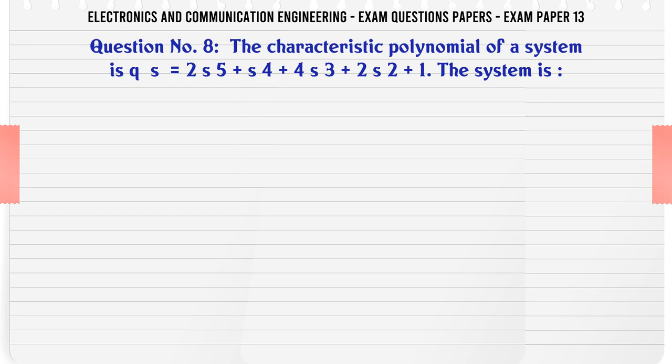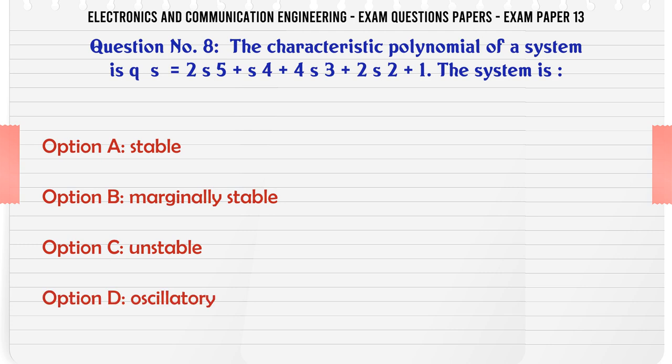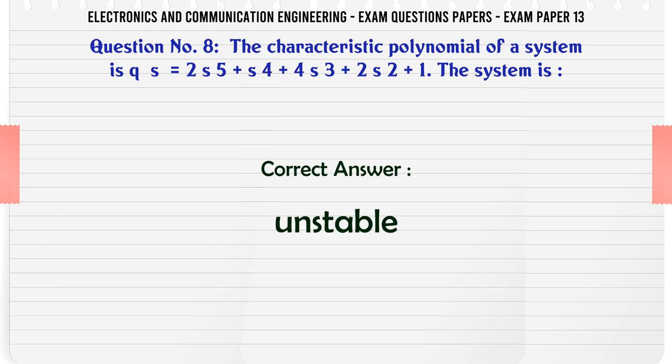The characteristic polynomial of a system is Q(S) = 2S^5 + S^4 + 4S^3 + 2S^2 + 1. The system is: A: stable, B: marginally stable, C: unstable, D: oscillatory. The correct answer is unstable.